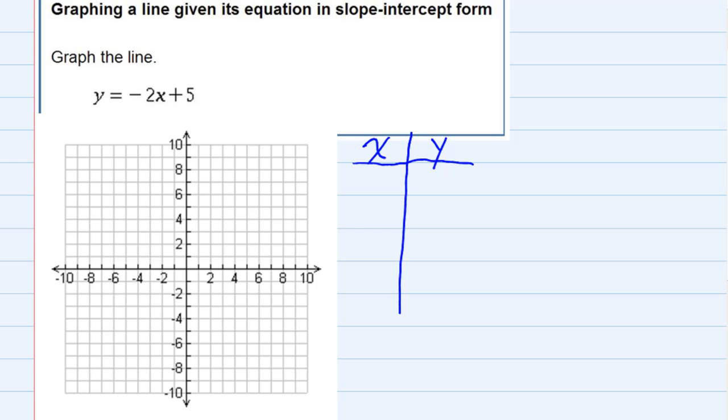Just to choose some numbers for x, I'm going to start off with 0, that's always a nice one. And just to mix it up a little bit, let's go with 1 and 2. These could be any numbers, just trying to keep them relatively small.